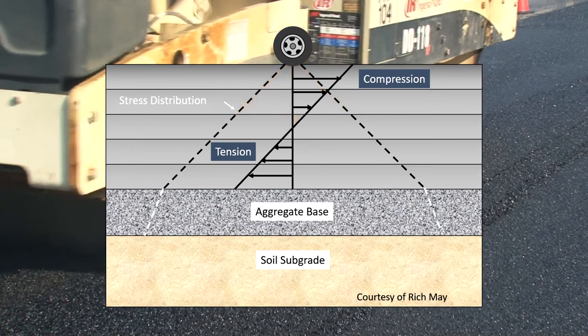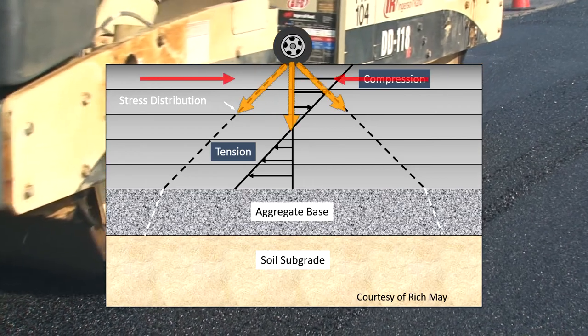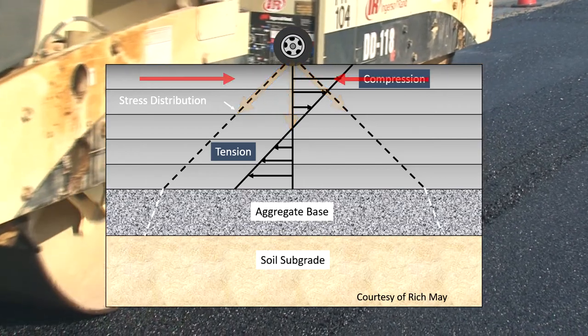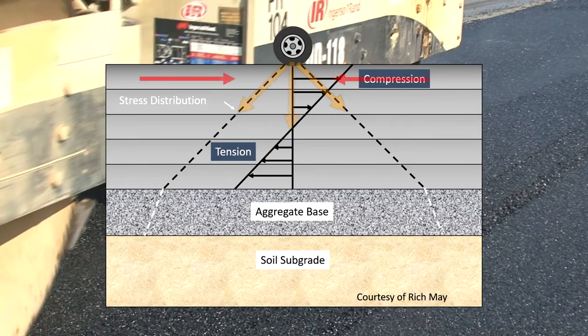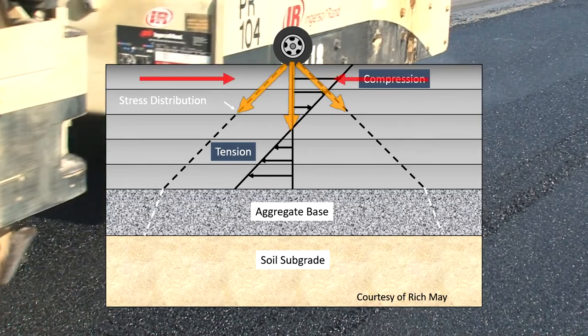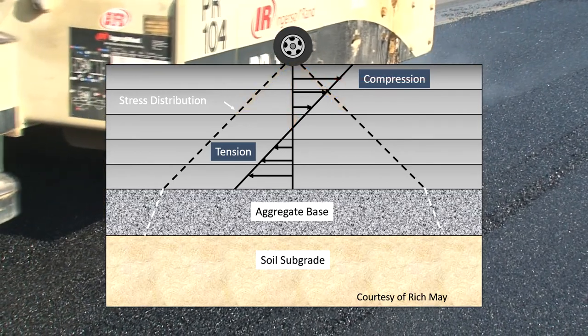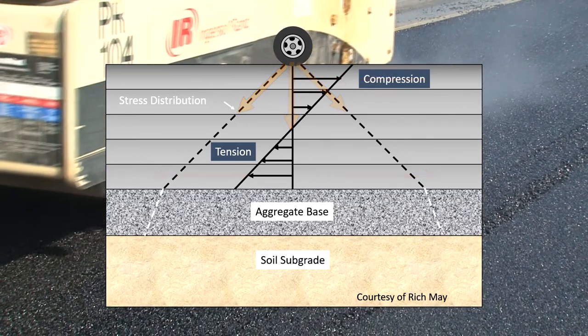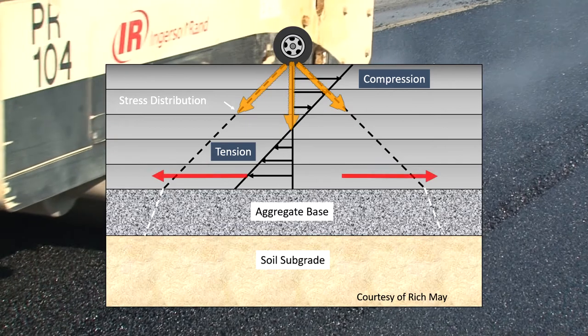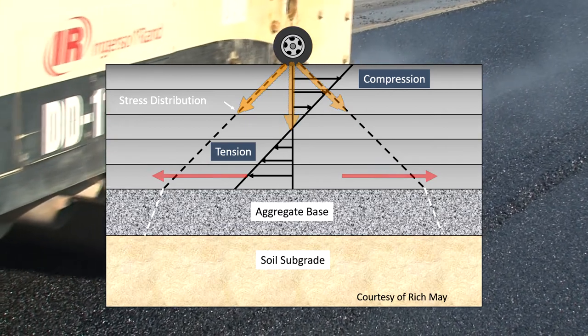The top layer will be experiencing compression as the structure deflects ever so slightly, and the lower layers will be experiencing tension as they are stretched by this deflection.